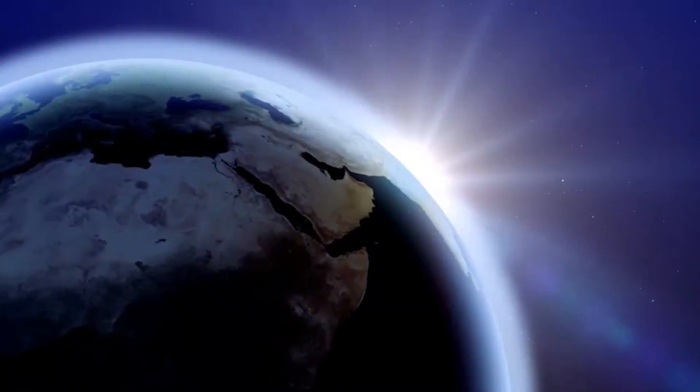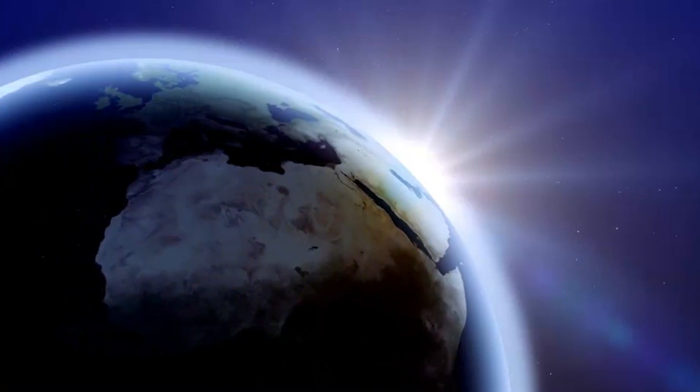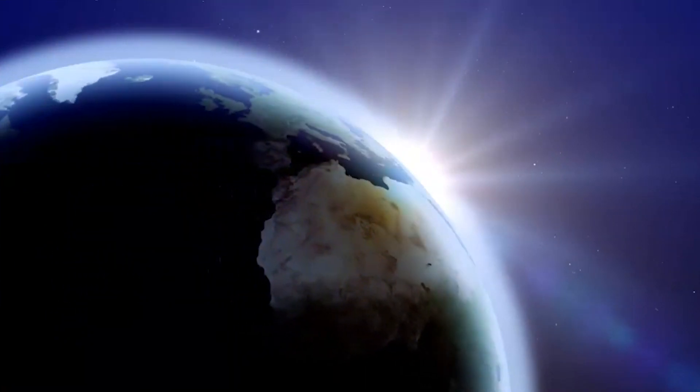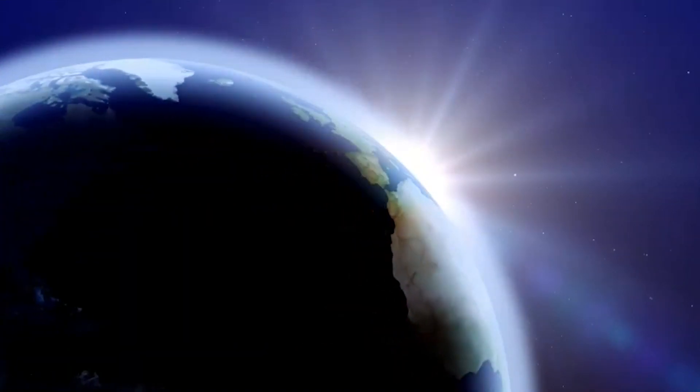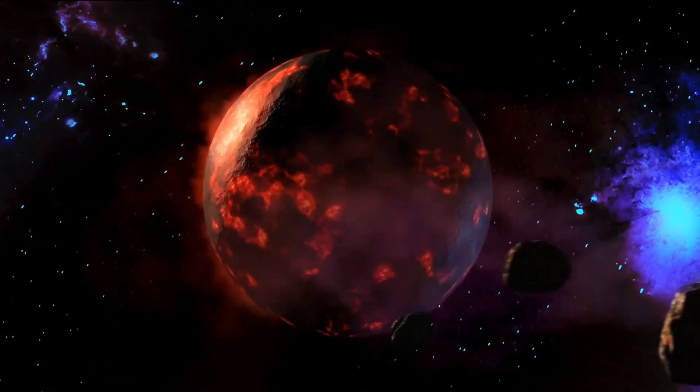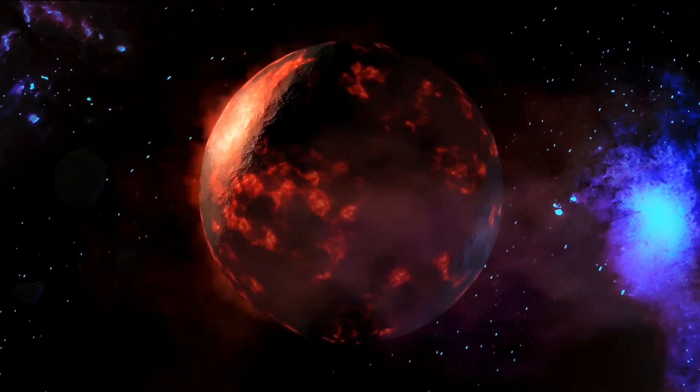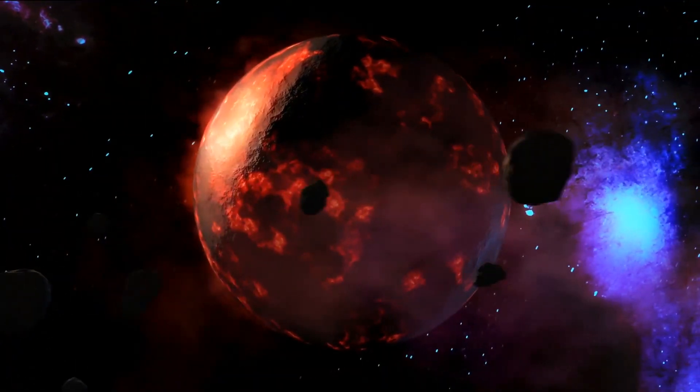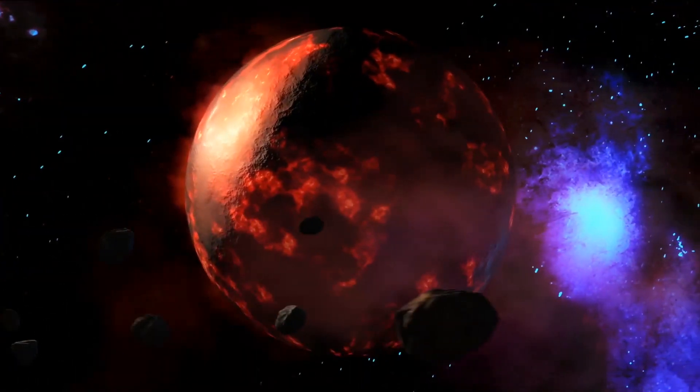Betelgeuse is one of the closest stars to Earth at a distance of only 650 light years away. This makes it a fan favorite with professional and amateur astronomers alike. Betelgeuse is a red giant star, which means that when it reaches the end of its life, it will explode in a spectacular supernova, possibly even becoming a black hole in the process.